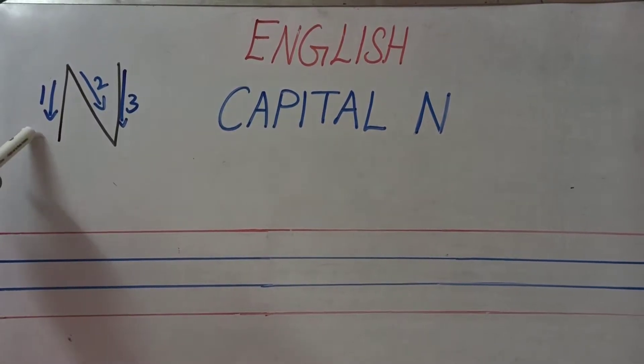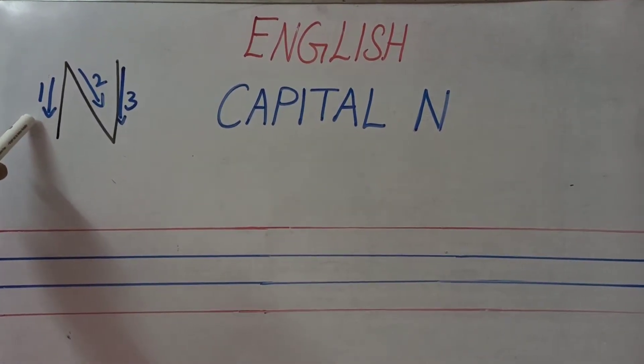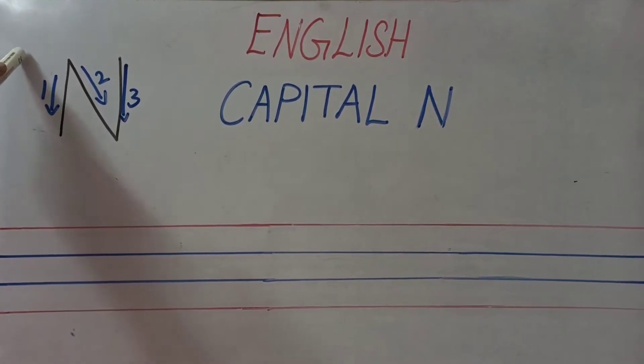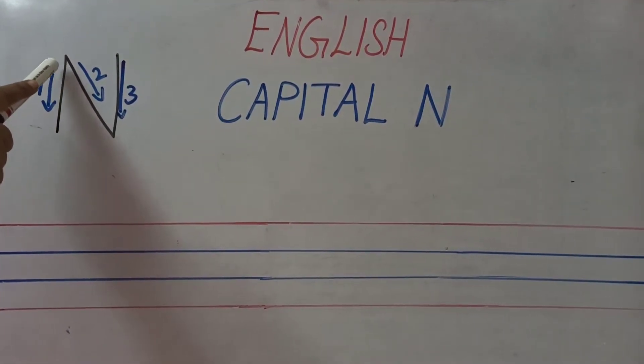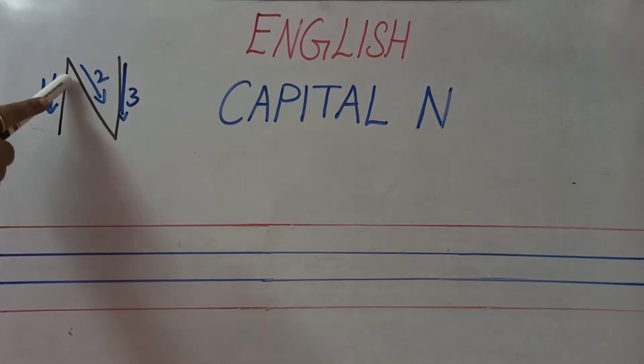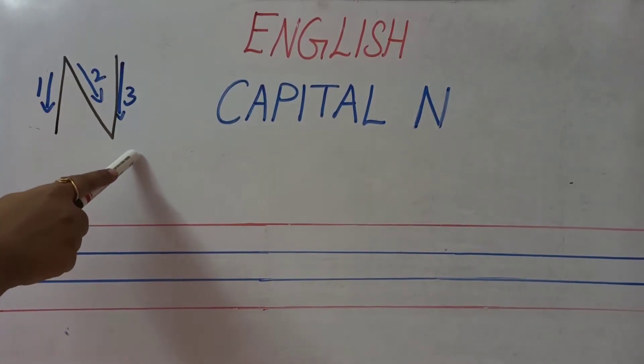How many formations? 1, 2 and 3. Number 1, start as a standing line. Number 2, then slanting line. What is the line? Slanting line. Then comes again standing line.